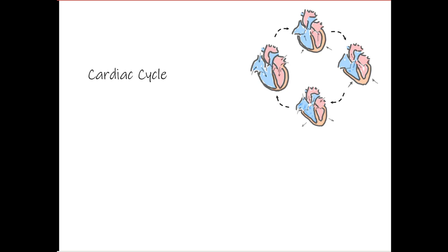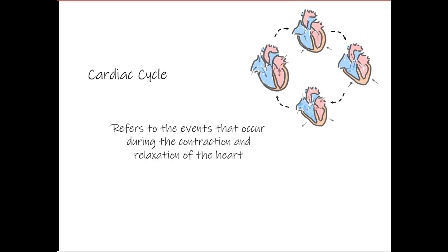With this information in mind, we can now talk about what's called the cardiac cycle. The cardiac cycle refers to the events that occur during the contraction and relaxation of the heart, and we can divide it into four different phases.